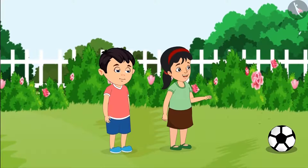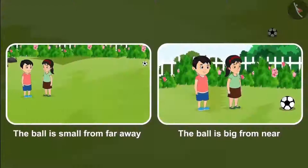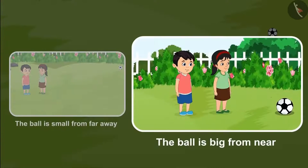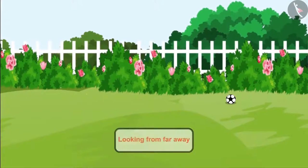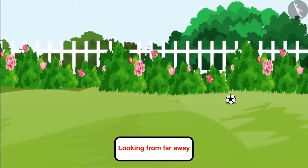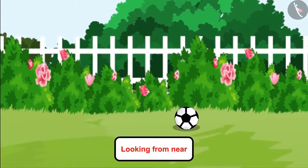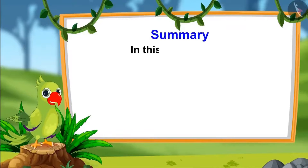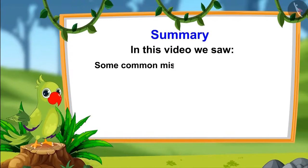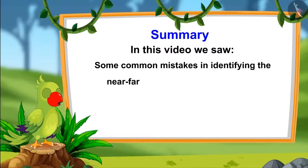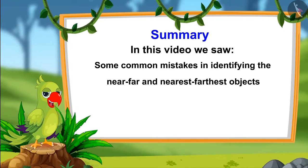'You are right, Chotu. It is a big ball.' Children, Chotu felt that the ball was small from a distance, but when he went near, it looked big. Things look small when seen from a distance. When we get closer to an object, we are able to see the real size of the object — that's why they look big when we get near. In this video, we have learned about some common mistakes which should not be made while identifying near-far and nearest-farthest objects. I hope you have understood this topic correctly. Bye, friends.